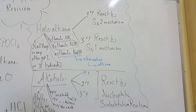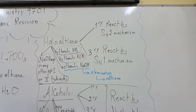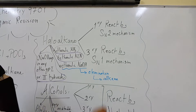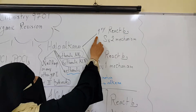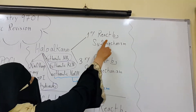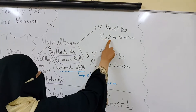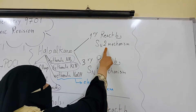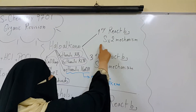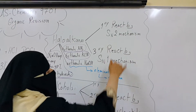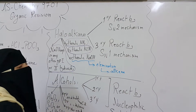Halo-alkanes can be primary, secondary, or tertiary. Primary halo-alkanes react by nucleophilic substitution reaction of the second order (SN2). Mechanisms for these reactions will be available on my Facebook page for reference.